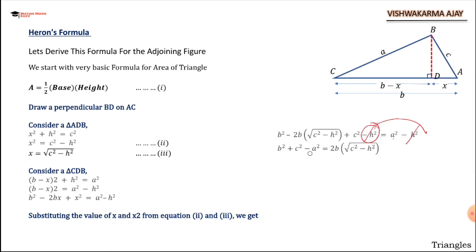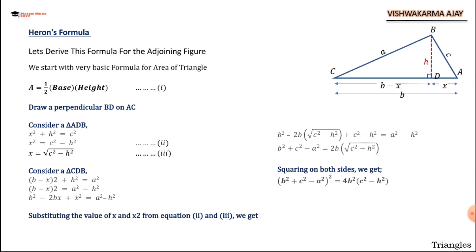A squared is shifted to the left-hand side: b squared plus c squared minus a squared equals 2b times root of (c squared minus h squared). Now we find the value of h. Squaring both sides: (b squared plus c squared minus a squared) whole squared equals 4b squared times (c squared minus h squared). Doing some basic algebra, we get h squared equals c squared minus (b squared plus c squared minus a squared) whole squared upon 4b squared.